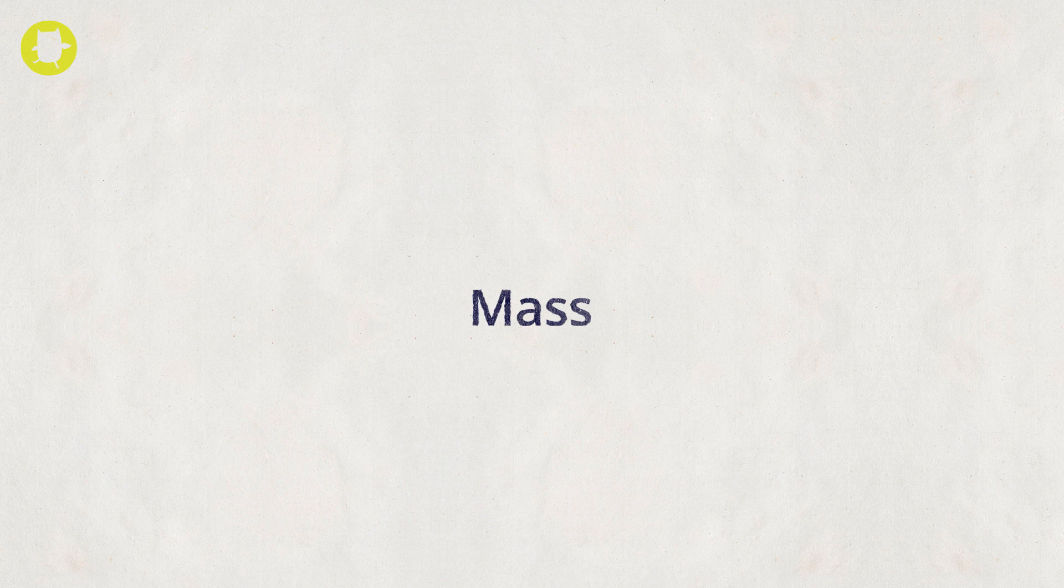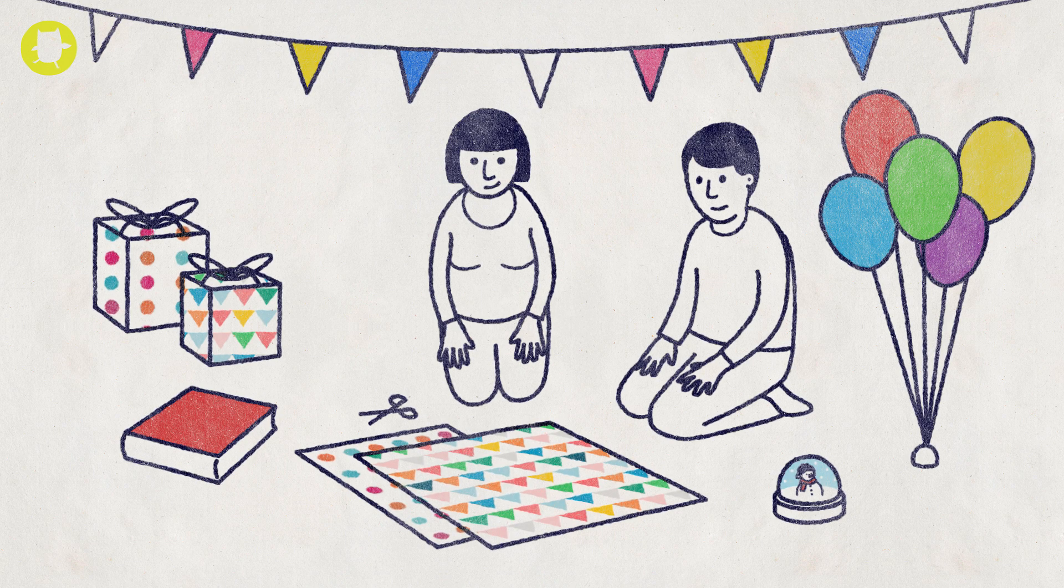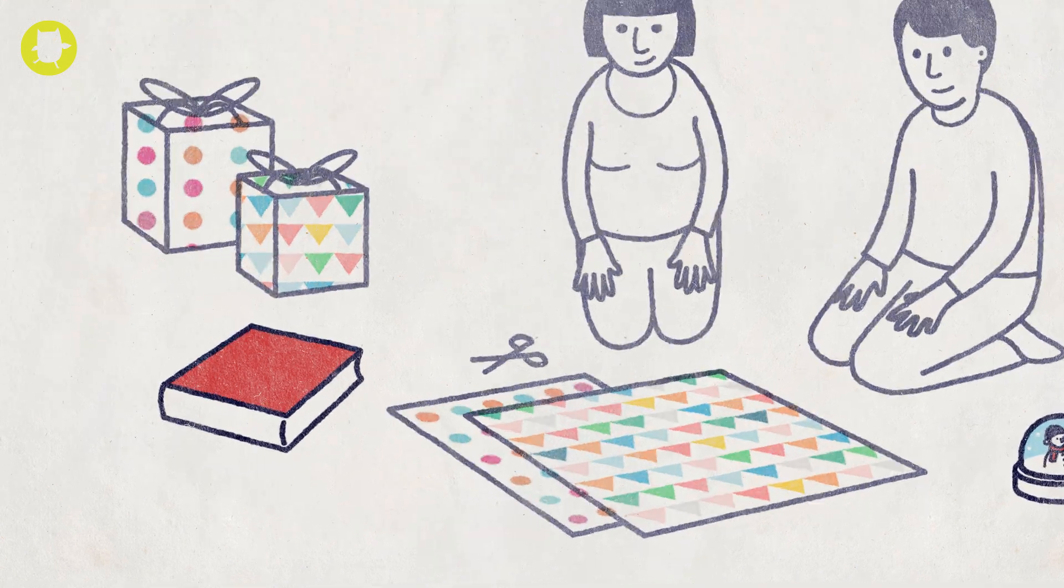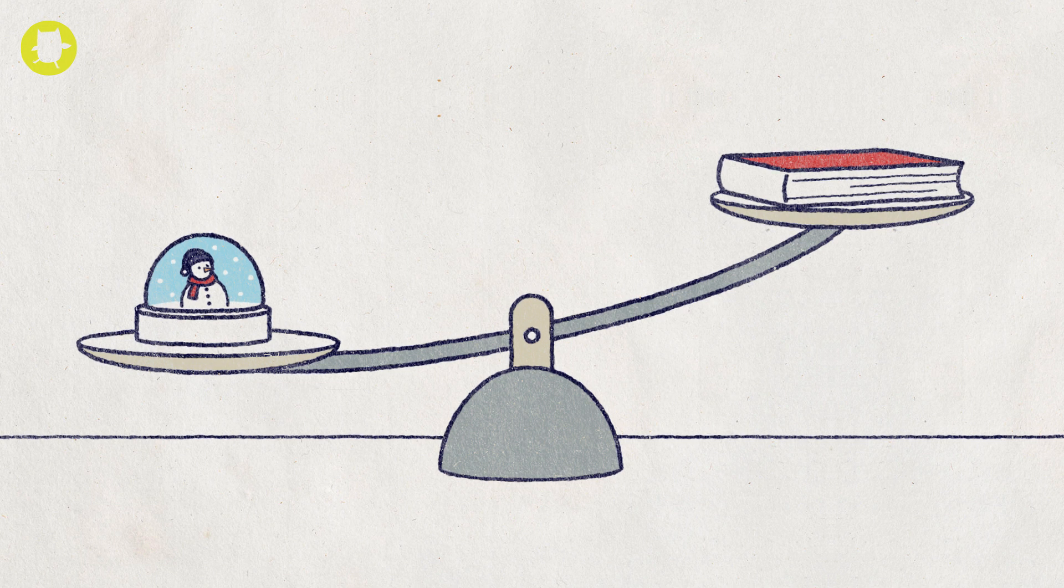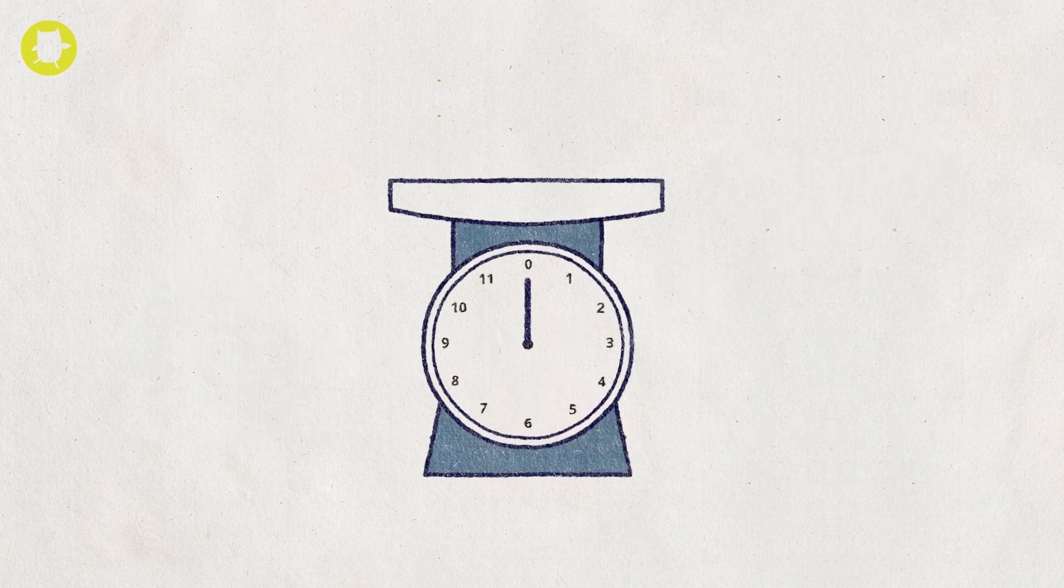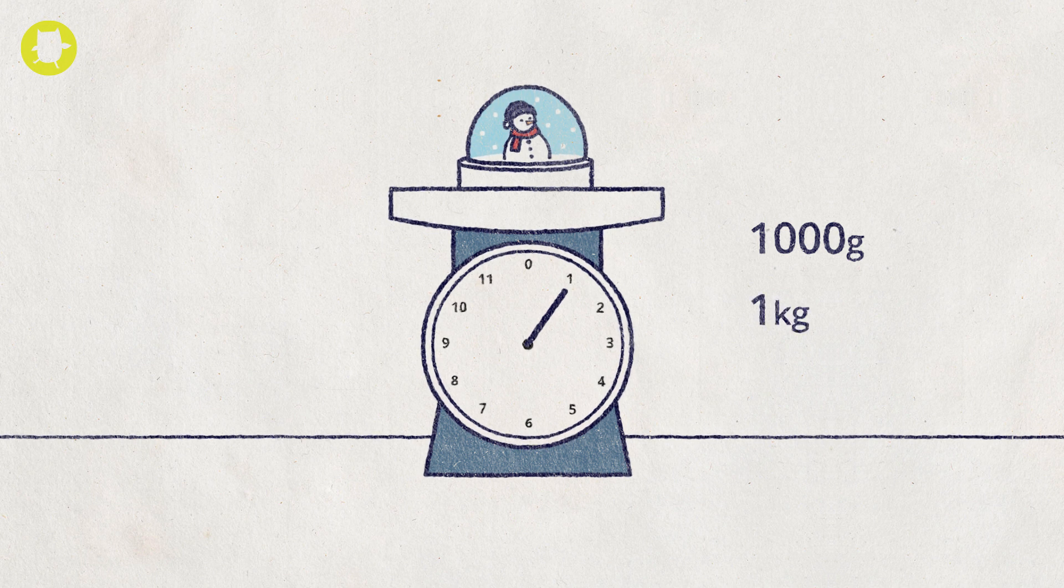Mass is the amount of matter or material in an object. A paperweight has a greater mass than a book. Metric units of mass are grams, kilograms and tons.